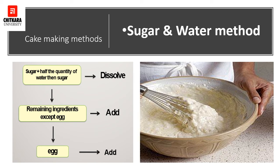In the sugar and water method, all the sugar and approximately half the quantity of water are agitated in a bowl until all the sugar is dissolved. Then the remaining ingredients except eggs are added, and the mixture becomes clear. Due to more aeration and better emulsification obtained in this method, the cakes produced have better texture and a longer shelf life. In the process, sugar and half the quantity of water are combined first, then remaining ingredients except eggs are added, and finally the eggs are added to give aeration and fluffiness to the cake.